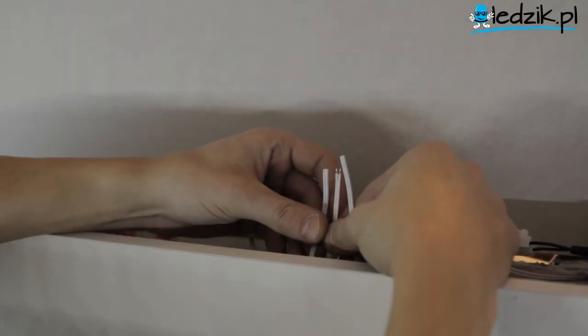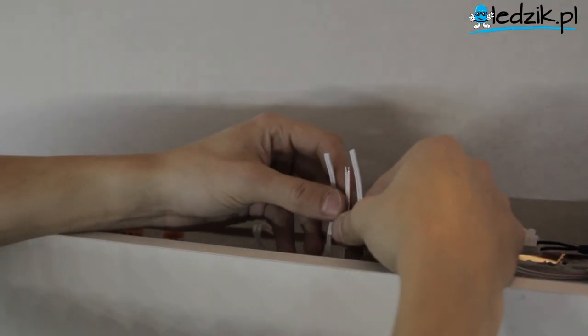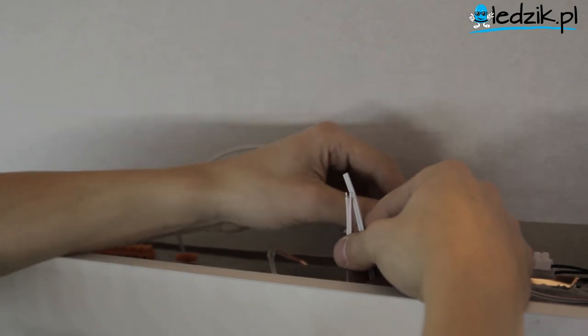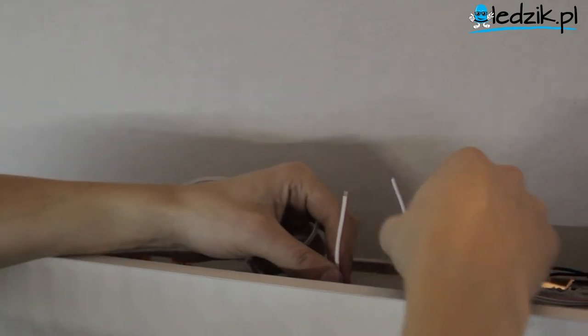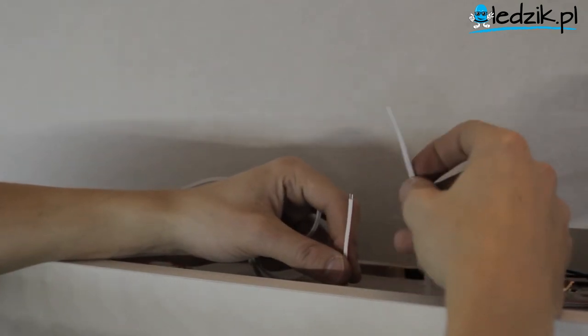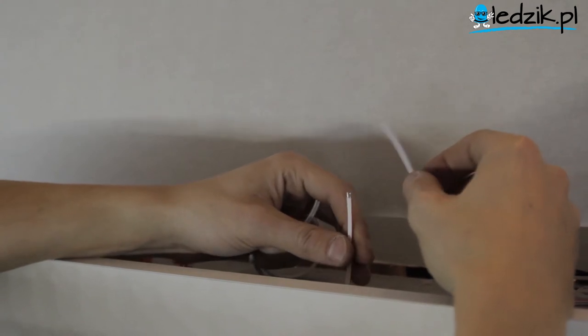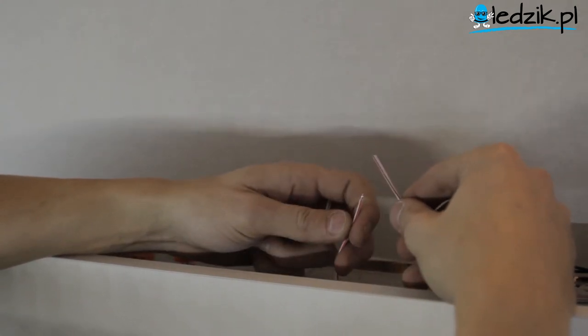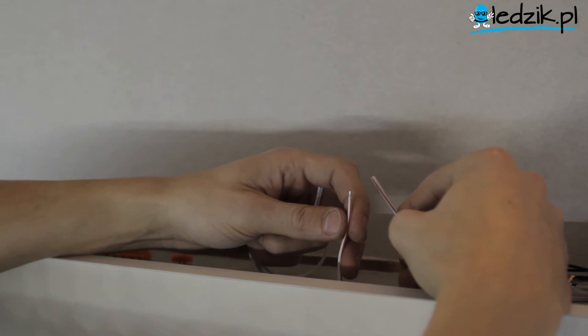Teraz przystąpię do wykonania połączeń elektrycznych. Przewód zasilający do zasilacza. Drugi przewód, który wychodził mi z czujnika, podłączam razem z taśmą LEDową, pamiętając o tym, aby zachować odpowiednią polaryzację. Plus z plusem, minus z minusem.